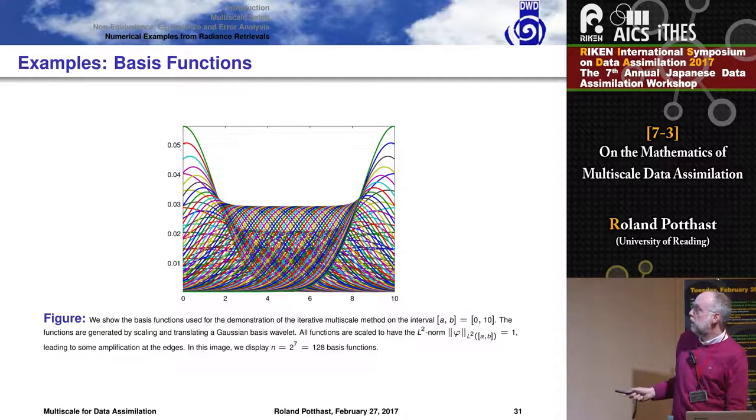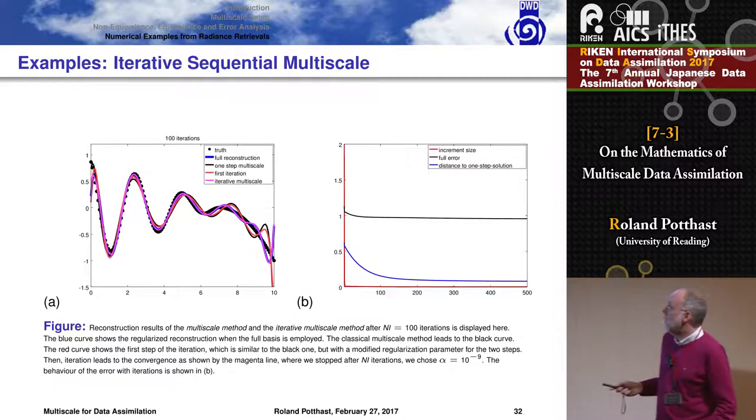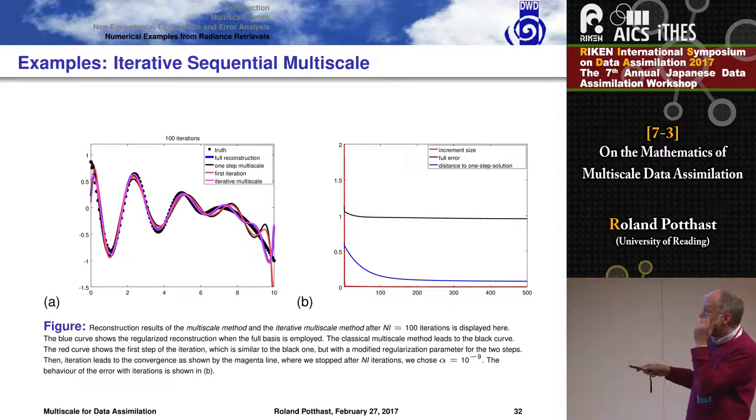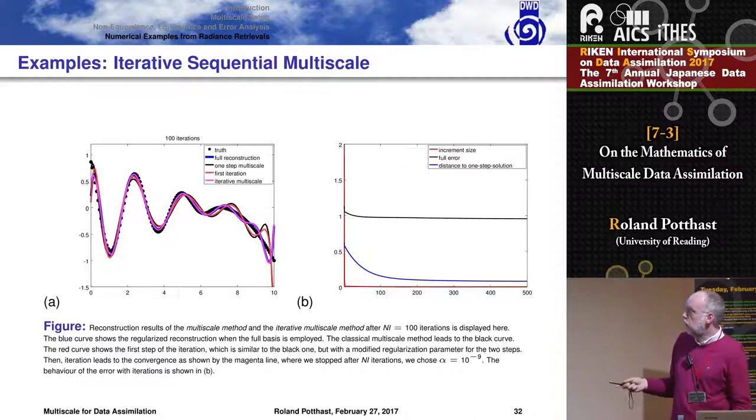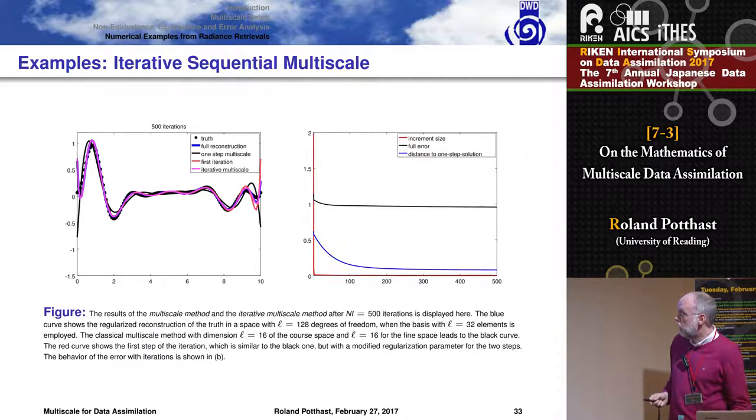Here we use a kind of multi-scale basis for like radiance retrieval type of applications. Then we basically carry this out. Here you see basically an example of some function. We played around with various functions to look at. You see the full reconstruction, one step multi-scale, and you see also convergence towards the one step solution. You can look at the full error because you are, of course, in a subspace. We took a true solution not being in the same subspace here to avoid inverse crimes, to get to good solutions which are unrealistic. All examples look similar here. You get this type of behavior.